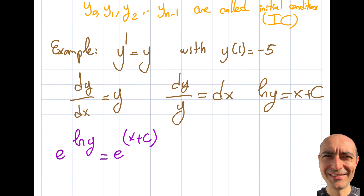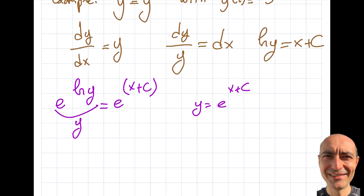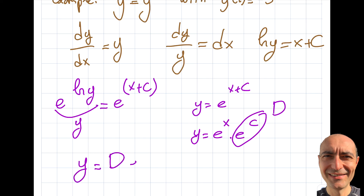I take e to the power of both sides: e^(ln y) = e^(x+C). Since e^(ln y) = y, I get y = e^(x+C). Using the rule for multiplying powers, this becomes y = e^x · e^C. Since e^C is a constant, I'll call it D. So the general solution is y = D·e^x.